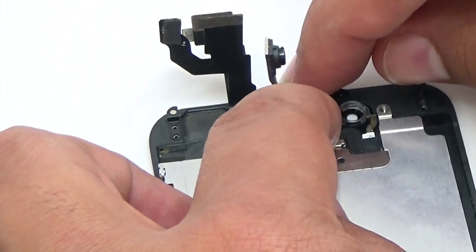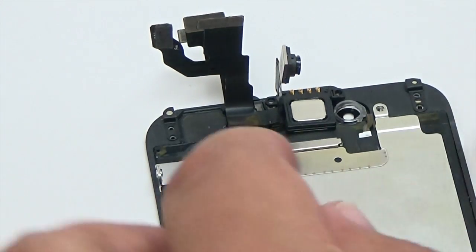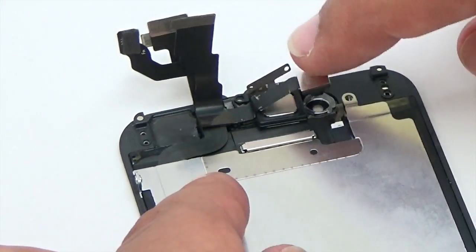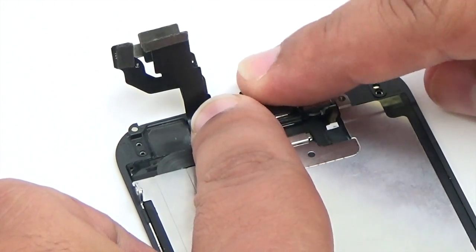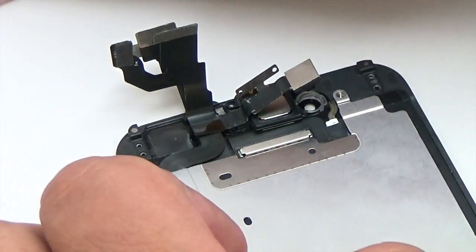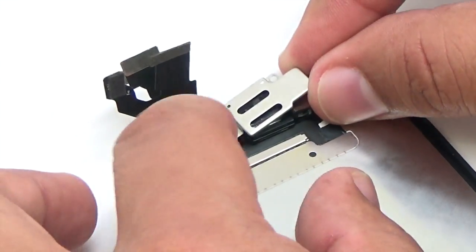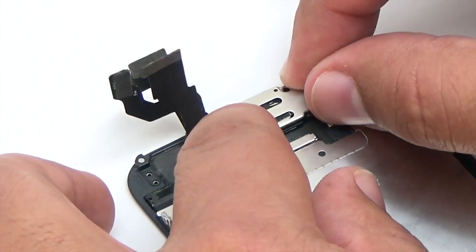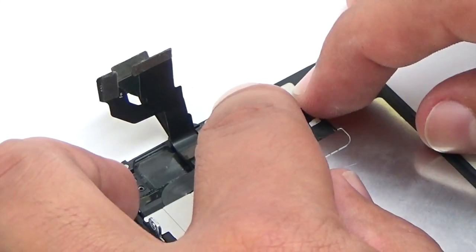Insert the ear speaker and fold over the front-facing camera. Place the front-facing camera bracket and insert the three screws to secure it to the display assembly.